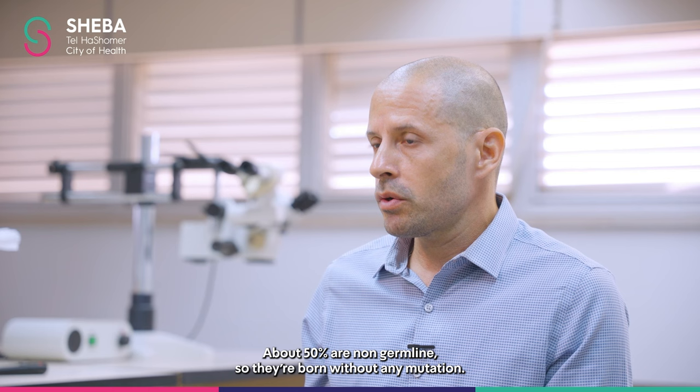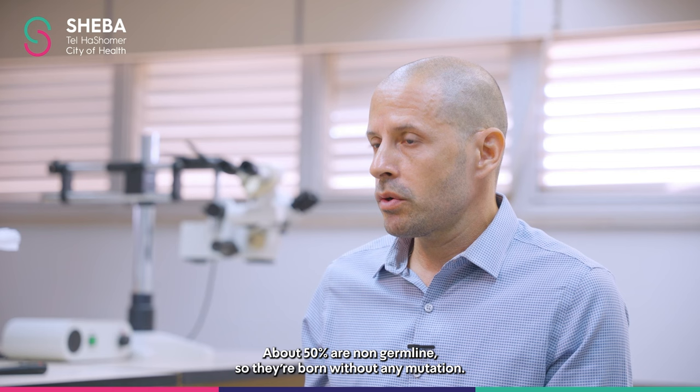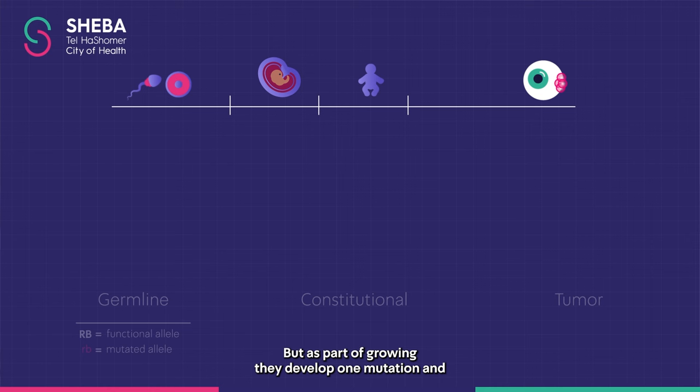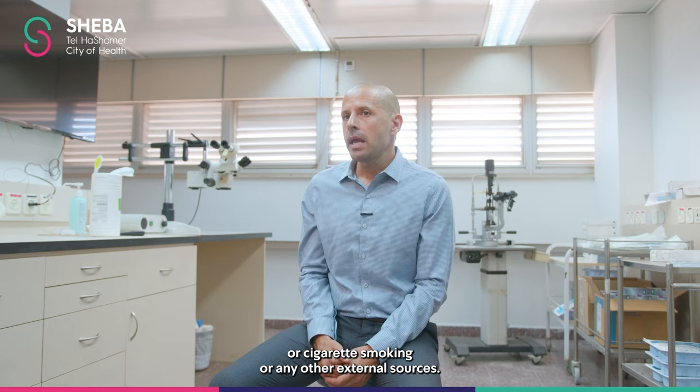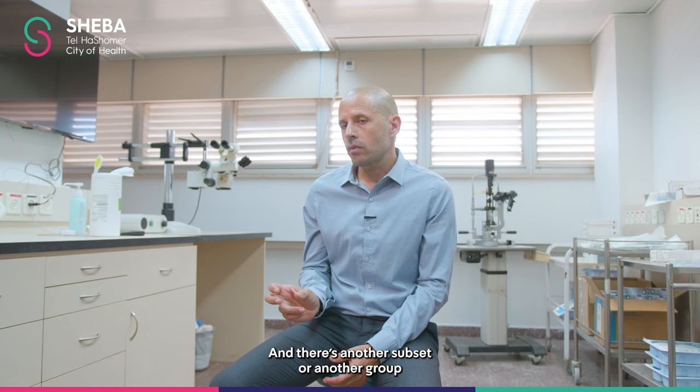About 50% are non-germline cases, so they're born without any mutation, but as part of growing, they develop one mutation, and unfortunately a second one for no reason — there are no external reasons like sun exposure or cigarette smoking or any other external sources.